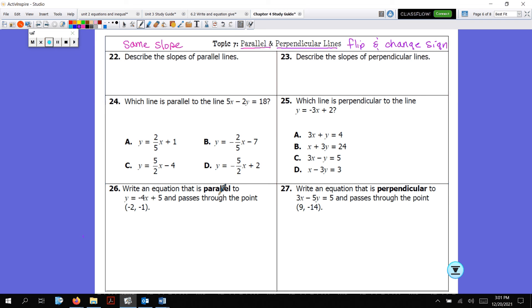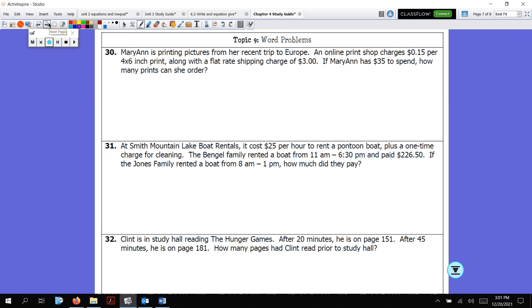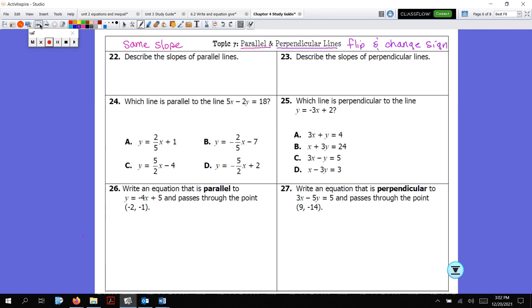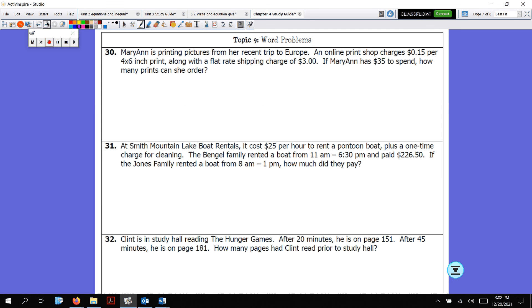Next topic is lines of best fit. What? I was just kidding. You didn't do that. I skipped that, actually. So go ahead and skip topic 8, line of best fit, because it's from the table. Just skip it. So skip topic 8.